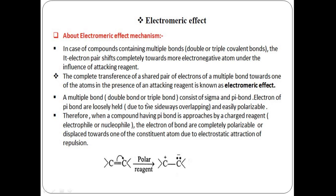A multiple bond — double or triple bond — consists of sigma and pi bonds. The electrons of the pi bonds are loosely held due to sideways overlapping and are easily polarizable. When a compound having a pi bond is approached by a charged reagent — an electrophile or nucleophile — the pi electrons can be completely transferred.